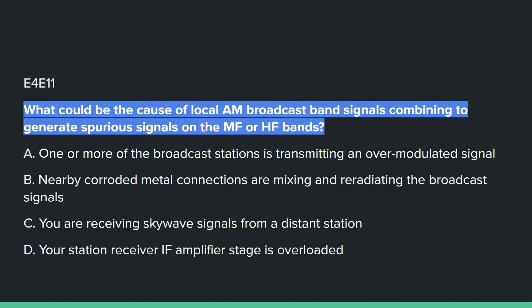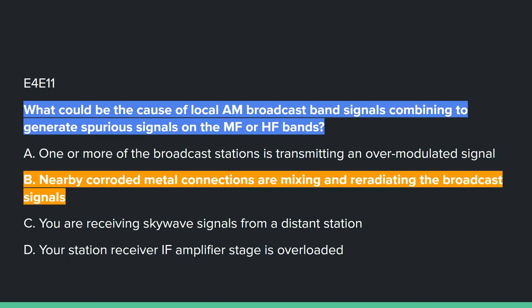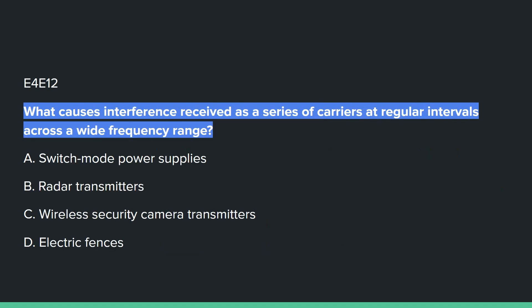E4E11: What could cause local AM broadcast band signals combining to generate spurious emissions on the MF or HF bands? Answer B: nearby corroded metal connections are mixing and re-radiating the broadcast signals.